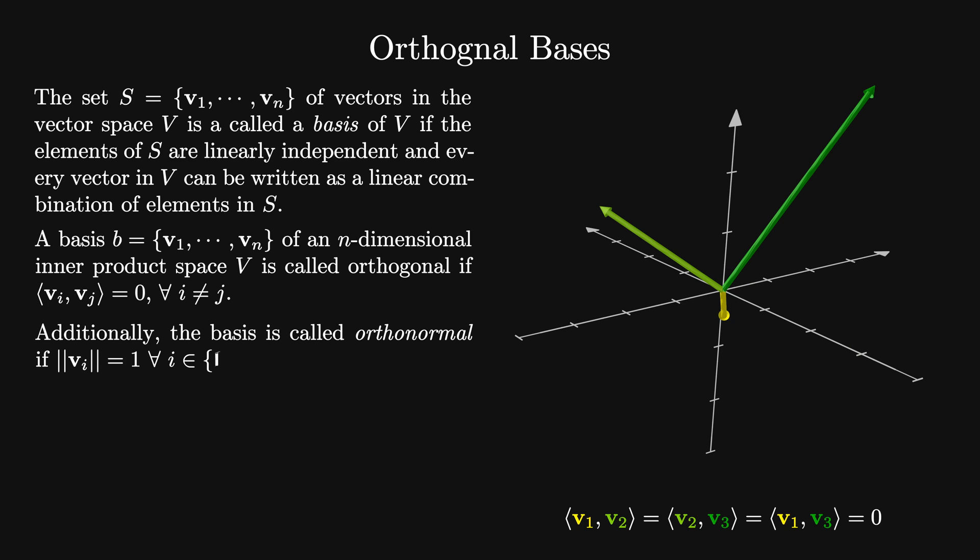Additionally, we call an orthogonal basis orthonormal if the magnitude of each of its elements is equal to 1. We can get this by dividing any vector by its magnitude.